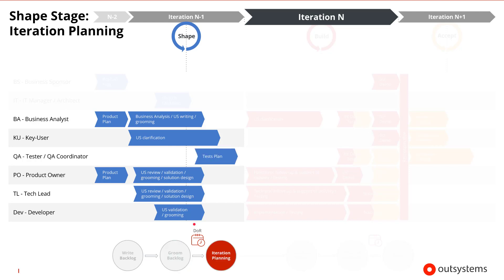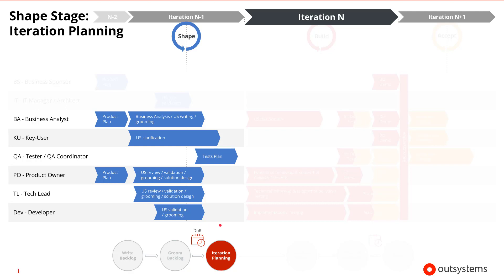Finally, the iteration planning activity involves the product owner, the tech lead, and the business analyst. They agree on which user stories are ready for the next iteration. This allows the tester to plan and define the test cases for those user stories and make sure that the test plan for the next iteration is ready to go.